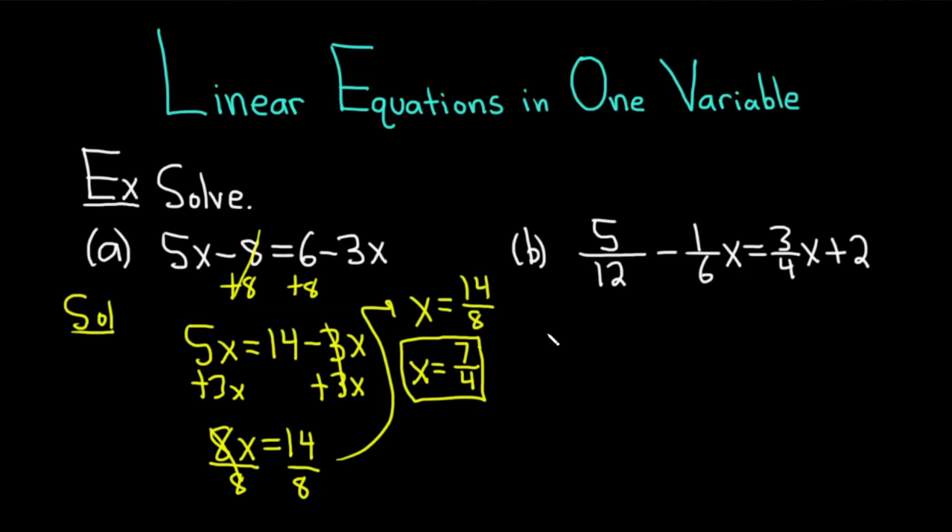Part B: we have 5/12 - (1/6)x = (3/4)x + 2. Let's work through this solution.